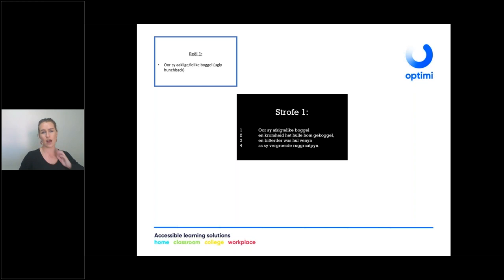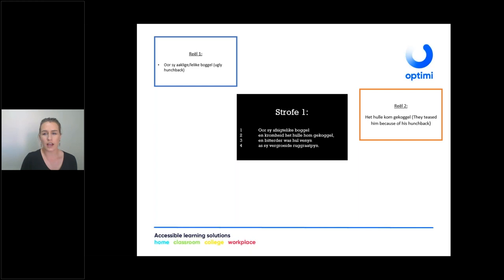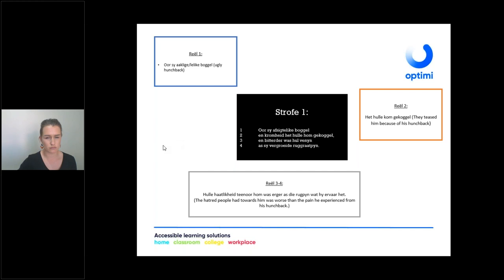Stanza one: verse one says he has an ugly hunchback — 'boogel' means hunchback. Verse two: 'kromheid' means the crookedness of his back. Because of his ugly hunchback and crooked back they teased him. Verses three and four: the hatefulness that people showed him was worse than the pain he experienced from his back. So the physical pain of having a hunchback was less painful than the emotional cruelty of other people.